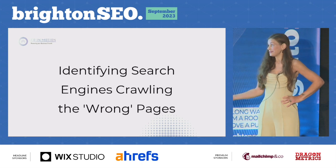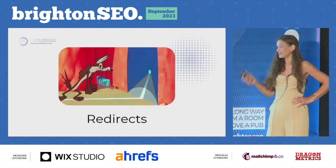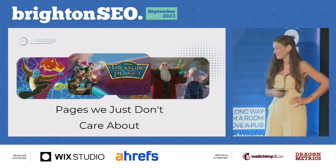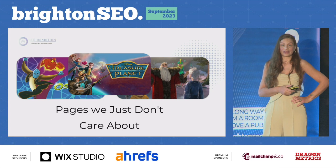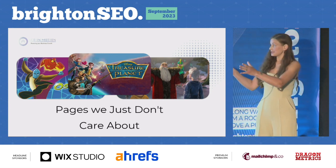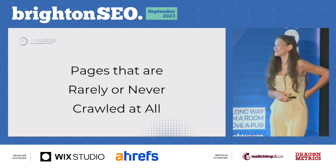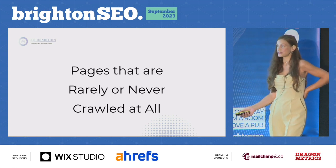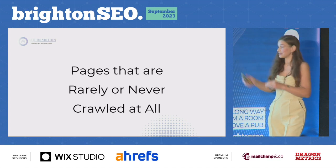We can also identify search engines crawling the wrong pages, such as 404s, redirects, canonicalized URLs, and pages we just don't care about. Among websites, there's usually lots of content that somebody thought was a great idea one day. There are also pages that are rarely or never crawled at all — it's really important to identify these, especially if they are important pages.